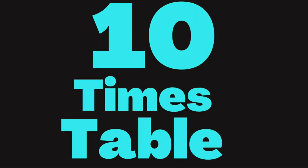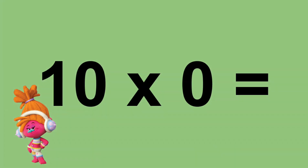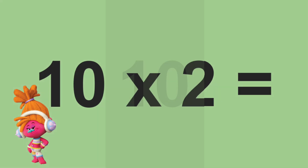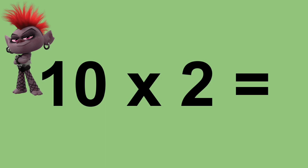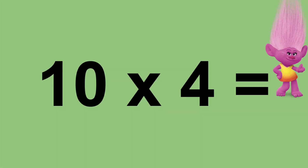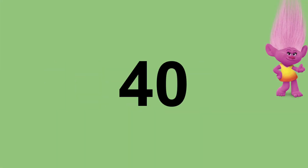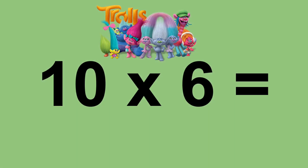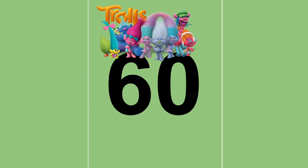Ten times zero equals zero. Ten times one equals ten. Ten times two equals twenty. Ten times three equals thirty. Ten times four equals forty. Ten times five equals fifty. Ten times six equals sixty.